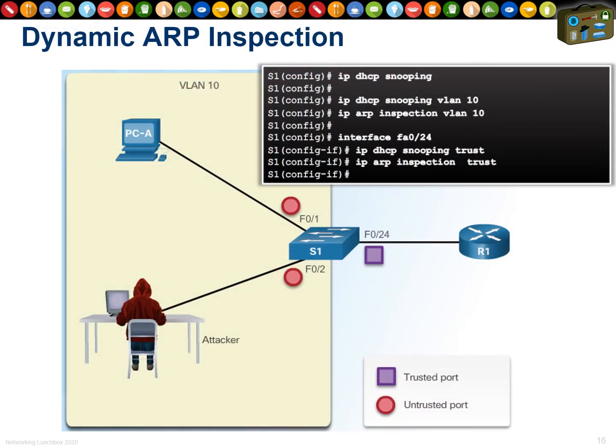We mitigate ARP poisoning using Dynamic ARP Inspection. Turn on DHCP snooping and Dynamic ARP Inspection together. The switch and R1 trust each other — when R1 announces its identity, the switch trusts it. When the attacker claims to be the default gateway, the switch checks its ARP table, already has R1's legitimate MAC and IP address, and rejects the attacker's claim. The attacker can no longer perform a man-in-the-middle attack using ARP.